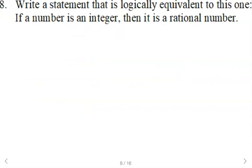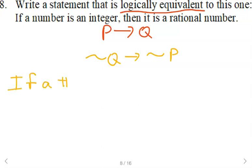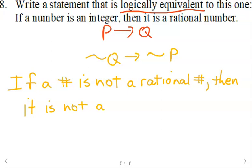So the converse takes a conditional and reverses the P and the Q. Write a statement that is logically equivalent. When you see the term logically equivalent, when you're dealing with conditionals, you want to think contrapositive. So if we take this conditional, we will negate and reverse. So we would say if a number is not a rational number, then it is not an integer. So again, negate and reverse for the contrapositive, which is logically equivalent to the conditional.